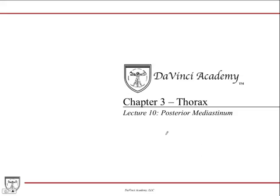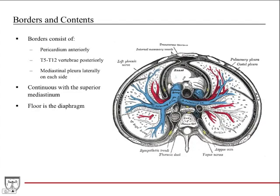This is the third and final lecture about the mediastinum, covering the posterior mediastinum. Its borders include the pericardium as the anterior border, T5 to T12 vertebrae as the posterior border, and the mediastinal pleura laterally on each side. It's continuous with the superior mediastinum, and the floor of the posterior mediastinum, like the middle and anterior, is the diaphragm.